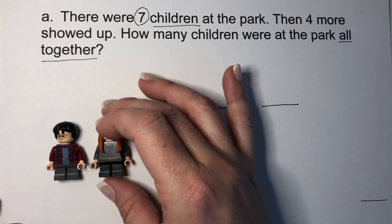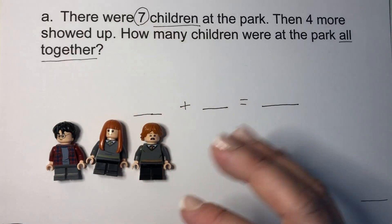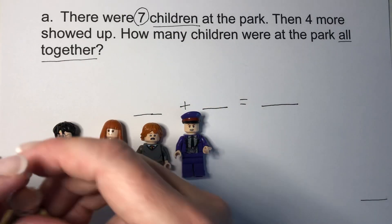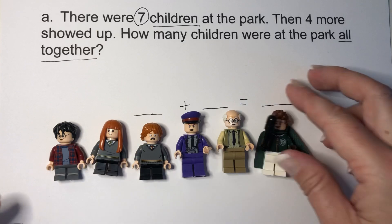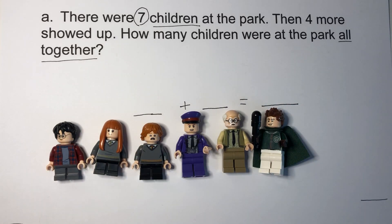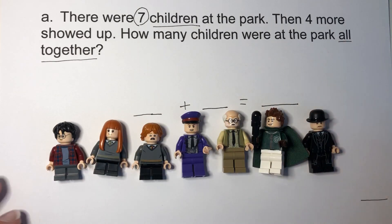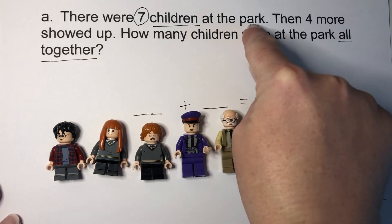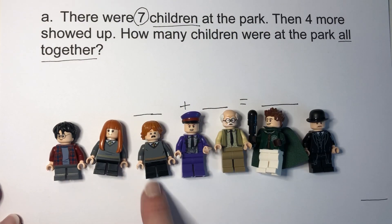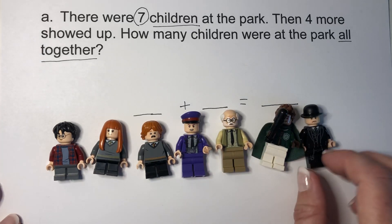One, two, three — these are Harry Potter characters — four, five, six, and seven. There we go. So far we have seven friends at the park. Let's read it again just to make sure that we have the right number. There were seven children at the park — one, two, three, four, five, six, seven. So there's seven children at the park.